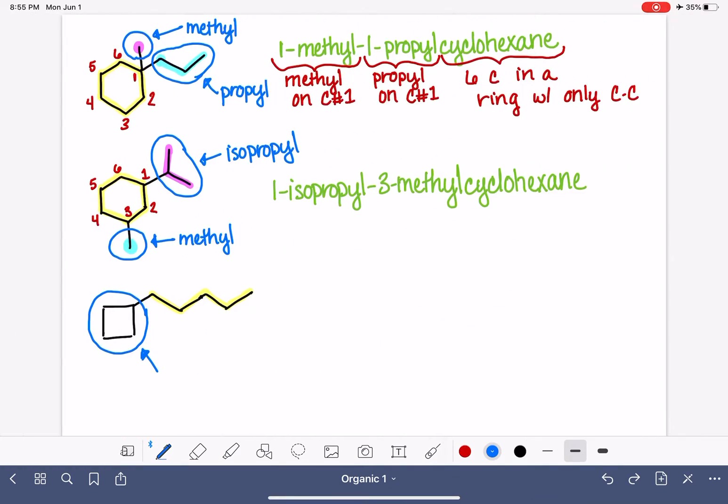The four-carbon ring substituent is called not butyl, but cyclobutyl. Again, we're going to use that prefix to indicate that the atoms are in a ring.